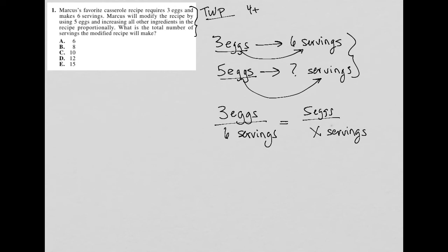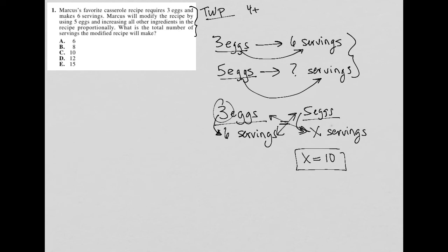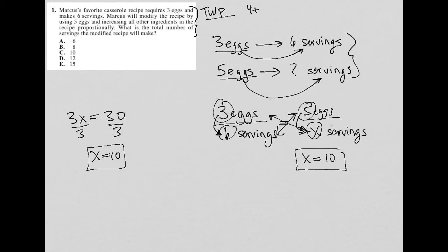I could just say three is half of six, so I would expect five to be half of X, therefore making X equal to 10. That's one way to solve it. The more traditional way to solve this proportion is to cross multiply, in which case I'd have three times X. So three X is equal to six times five, which is 30. Divide both sides by three and I get X equals 10.